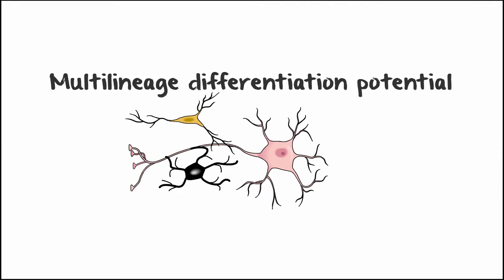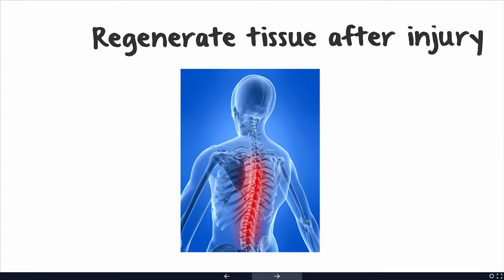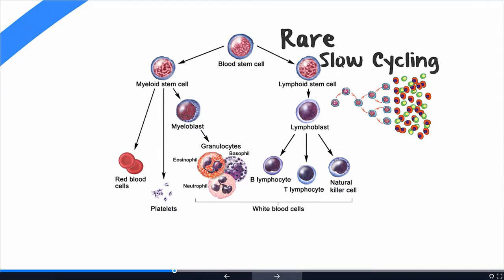There is also multi-lineage differentiation potential, though we won't touch on this because it doesn't really relate to the cancer stem cell hypothesis. And stem cells regenerate tissue after injury — when you bleed and lose cells, hematopoietic stem cells are responsible for replenishing them. Now, there are two other features that virtually all somatic stem cells exhibit, and these are actually really important for the cancer stem cell hypothesis.